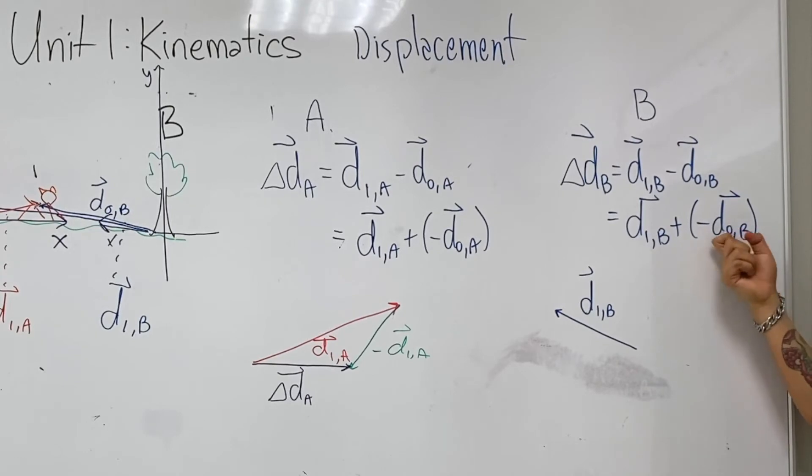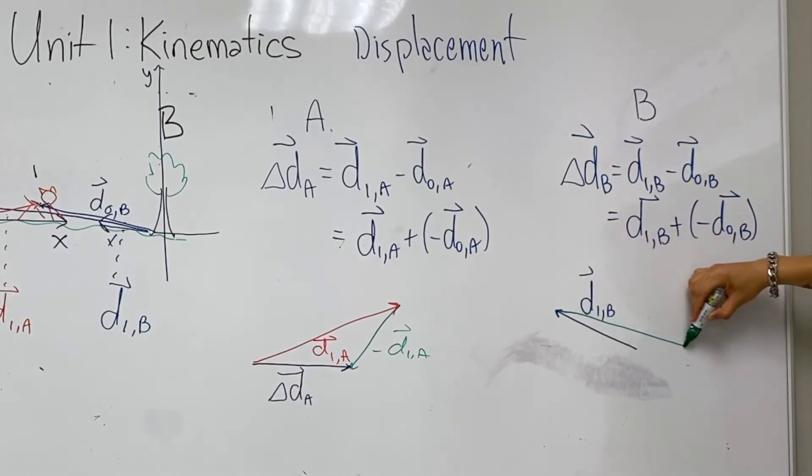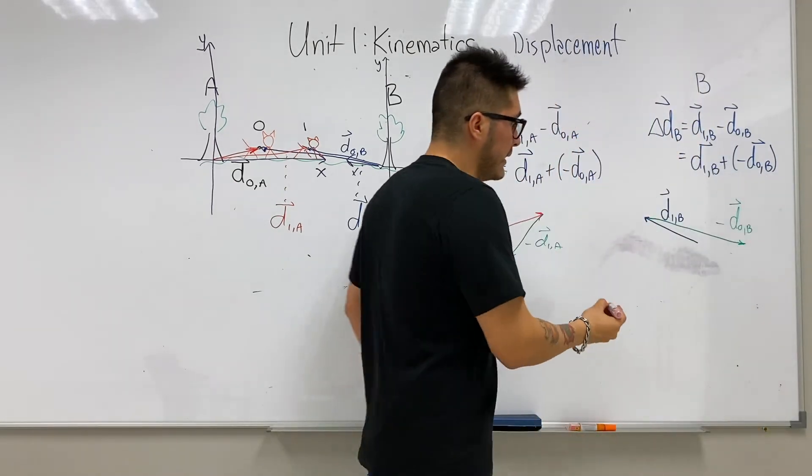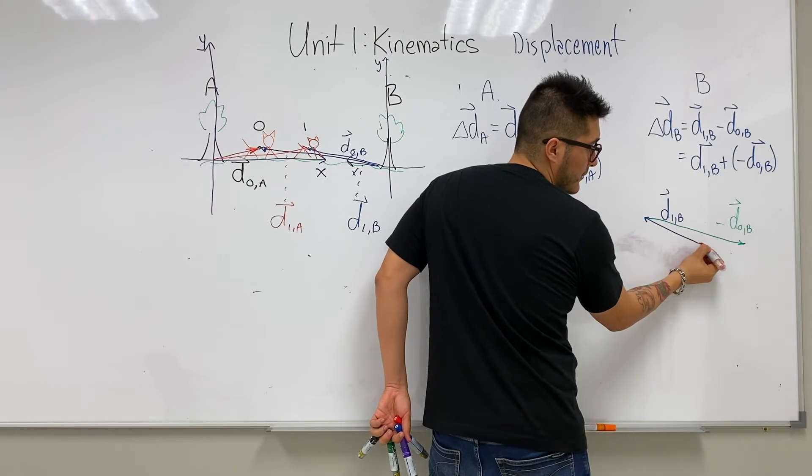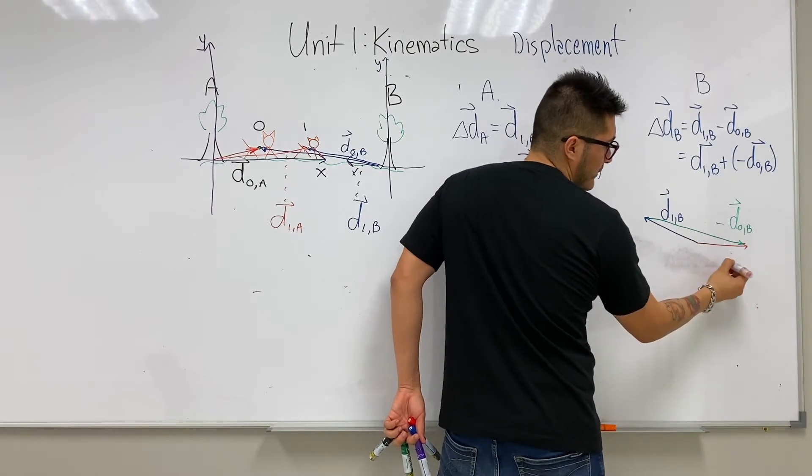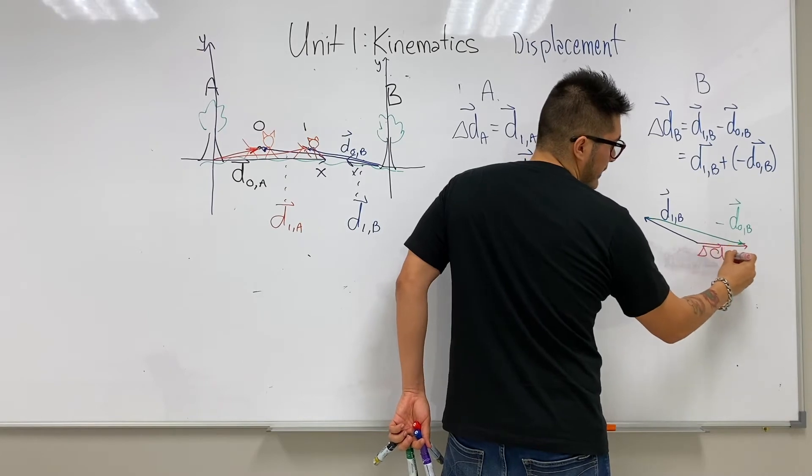But D initial B is in the opposite direction. So let's draw what that looks like. It's a really long one. This is minus D initial B. And the resultant is the tail of the first to the head of the second one. So this is D delta Db.